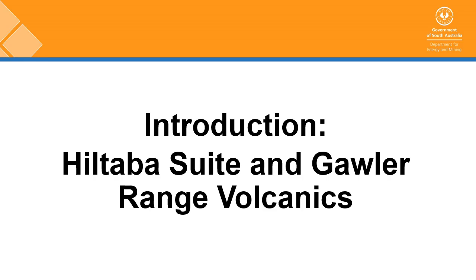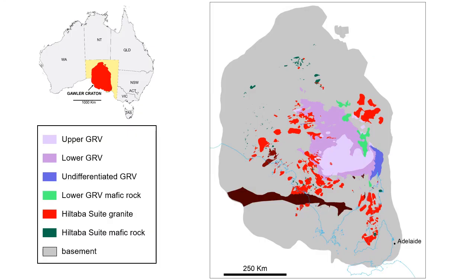Introducing the Hildibus Suite and the Gawler Range Volcanics. Here we have a simplified geology map of the Gawler Craton highlighting the distribution of the Gawler Range Volcanics and the Hildibus Suite. The Gawler Range Volcanics are divided into two main components: the lower Gawler Range Volcanics (lower GRV) and the upper Gawler Range Volcanics. The Hildibus Suite is the intrusive component, divided into a felsic and a mafic component — the red representing granites and the dark green representing the mafic intrusive rocks.